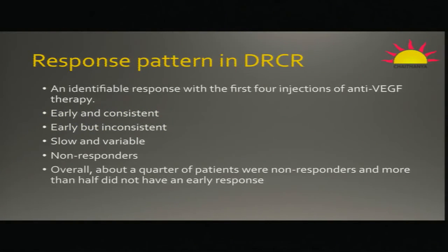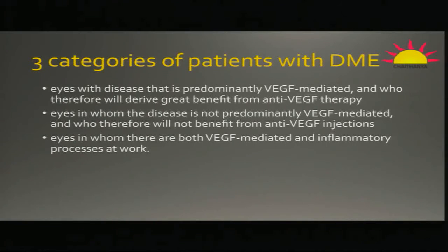There are four types of response to anti-VEGF: early consistent, early inconsistent, slow variable, and non-responder. If you fall in the slow variable or early inconsistent response category and you stop anti-VEGF treatment earlier without assessing the type of response, you are stuck not knowing whether the drug is working. It is important to diagnose these types of responders to decide who to shift to steroids earlier. Based on that, there are three groups: VEGF-driven response, VEGF-independent response, and partial VEGF-driven response. For the independent and partial-driven groups, adding steroids makes a lot of sense.